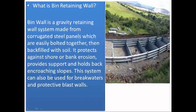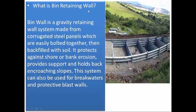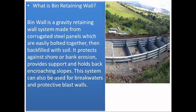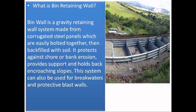The next type of retaining wall is the bin retaining wall. As shown in the picture, bins are made with corrugated steel sheets and are bolted together to form a continuous retaining wall system. They are then filled with crushed rock or free-drainage materials, thereby reducing hydrostatic pressure.